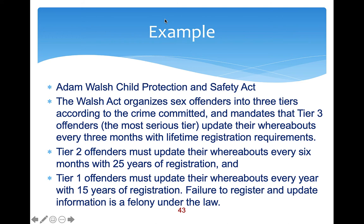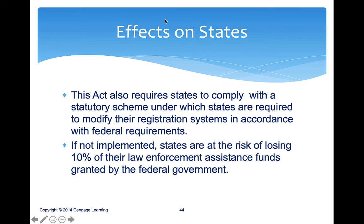There's a case called US v. Comstock that illustrates this. John Walsh, who had a TV program called America's Most Wanted, had his son Adam murdered by a repeat offender. On the 25th anniversary of Adam's death, Congress passed the Child Protection and Safety Act, which organized sex offenders into three tiers — tier three being most serious down to tier one. States were required to modify their registries in accordance with federal requirements. In California there's a website called Megan's Law listing registered offenders in your area.